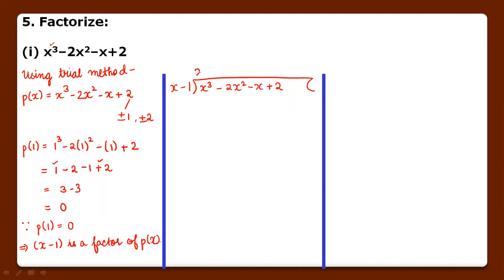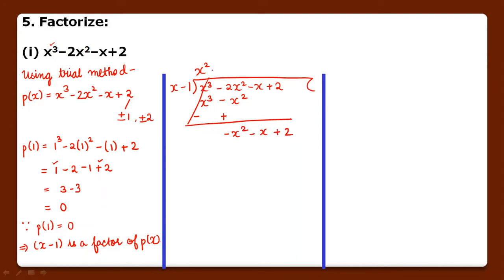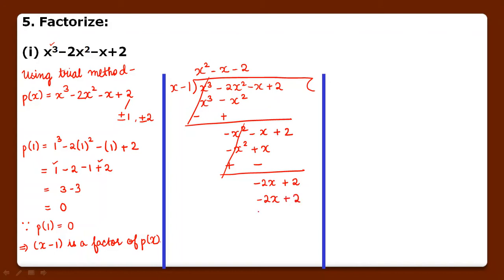Dividing x cube minus 2x square minus x plus 2 by x minus 1: x cube divided by x gives x square. Multiply x square into (x minus 1): x cube minus x square. Sign changed, it cancels. Bring down: minus 2x square plus x square = minus x square minus x plus 2. Divide minus x square by x = minus x. Multiply: minus x square plus x. Sign changed, cancels. Bring down: minus x minus x = minus 2x plus 2. Divide minus 2x by x = minus 2. Multiply minus 2 into (x minus 1): minus 2x plus 2. Sign changed, cut. Remainder is 0.